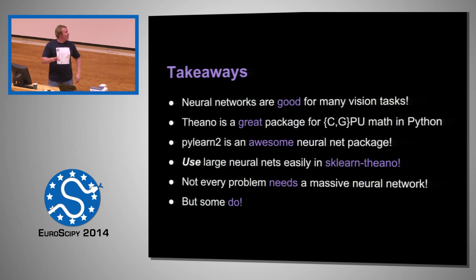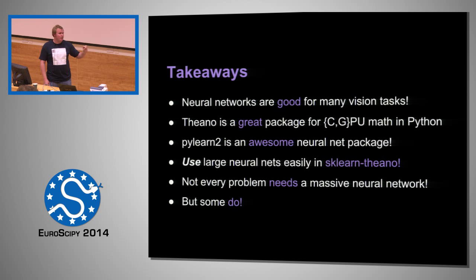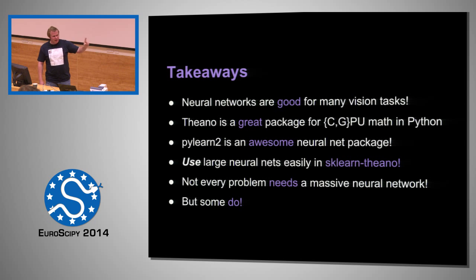The takeaways: neural networks are good for many, many vision tasks. Look at them as data-dependent feature extractors in your CV pipeline. After implementing a simple one as a benchmark, start to get more advanced and explore it. Theano is a great package for CPU or GPU math in Python. PyLearn2 is amazing for training neural networks if you want the intricate nitty-gritty. Scikit-learn-theano will give you the tools to use them as I showed. Finally, not every problem needs a neural network — the hype train is dangerous. Start with the simplest possible model and build from there.